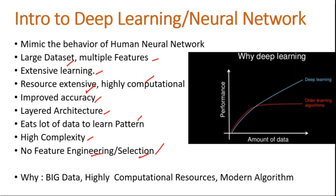Looking at the graph, we use deep learning because when the amount of data increases, older shallow machine learning algorithms like linear regression, logistic regression, KNN, and random forest show constant performance — even as data increases. But in deep learning, performance also rises with the increase in amount of data. That's why we use deep learning.